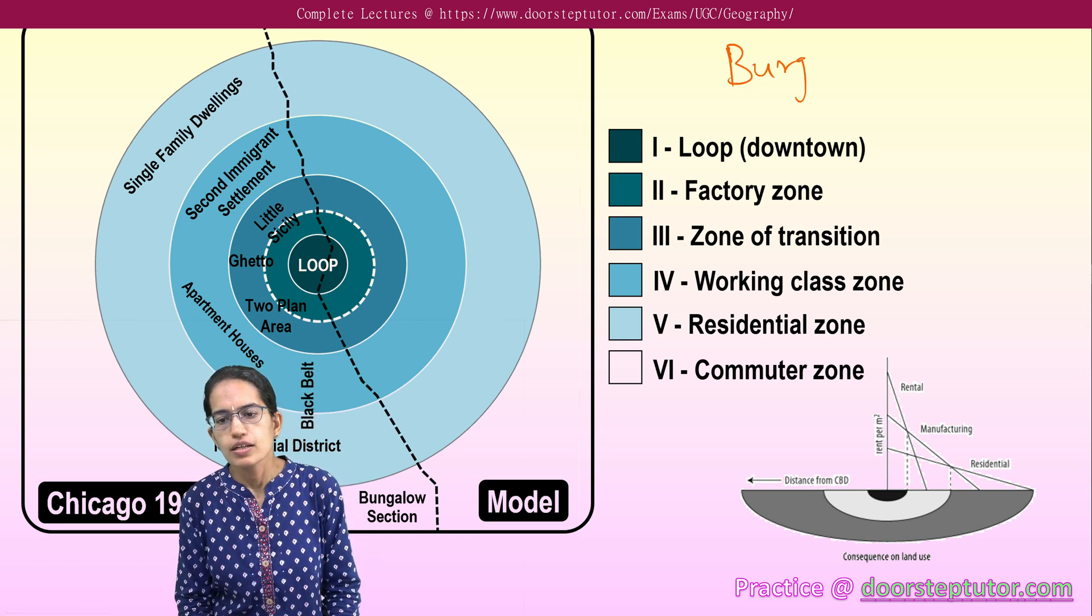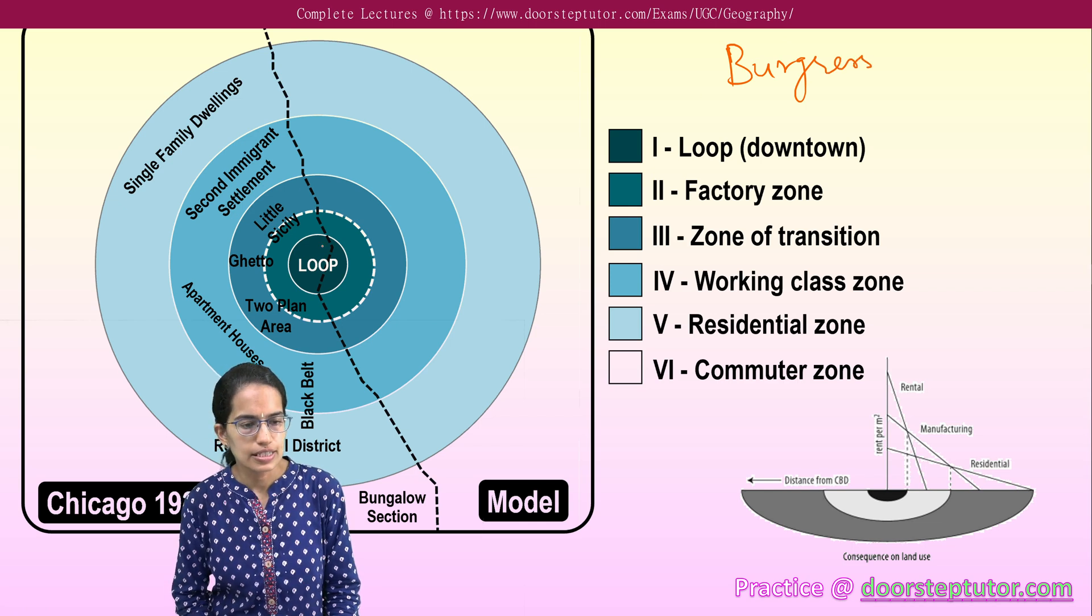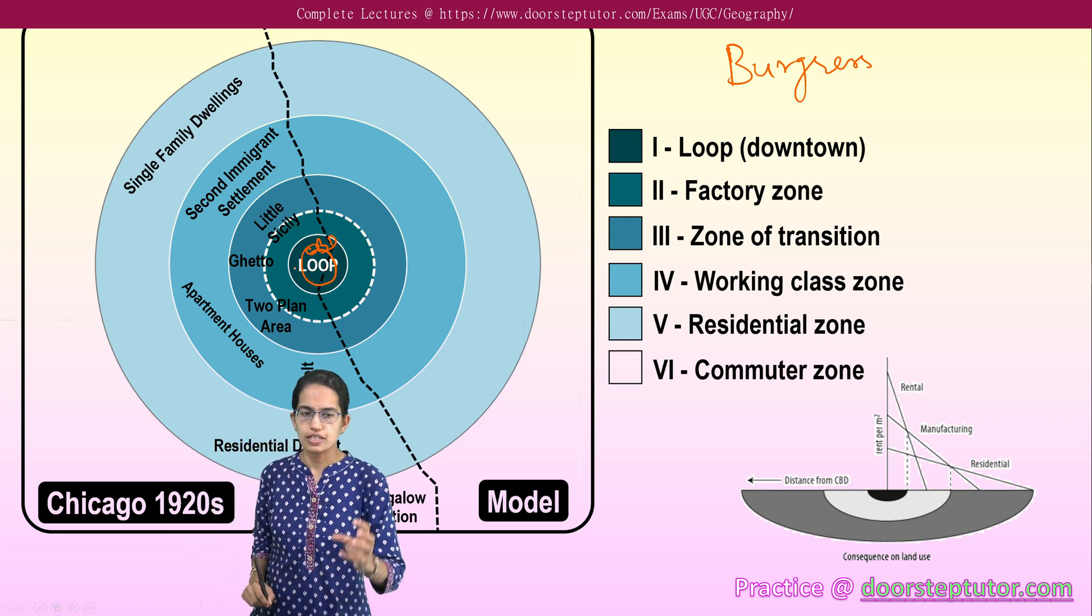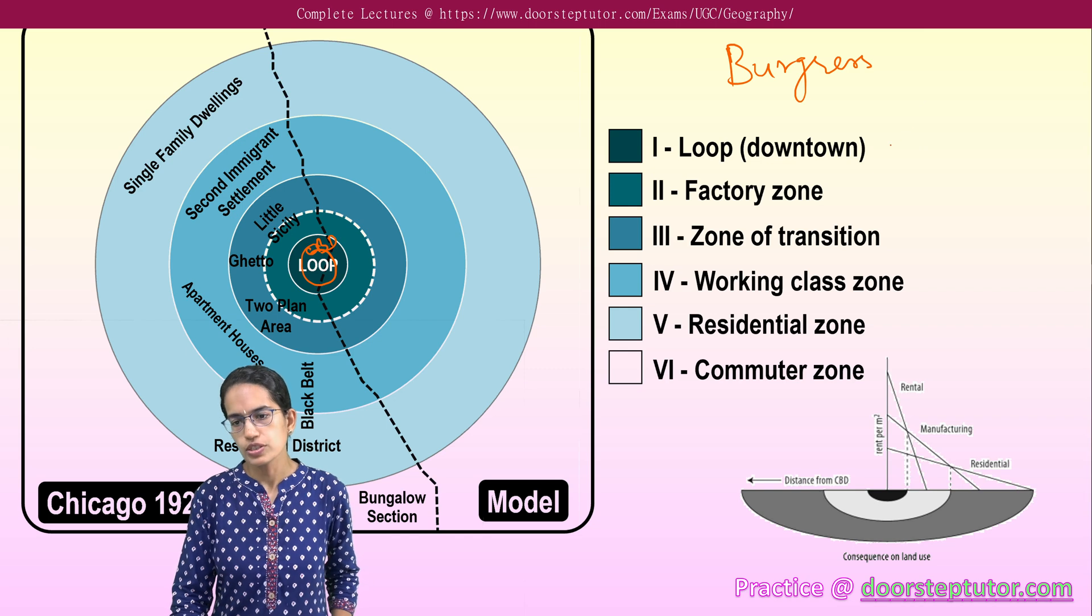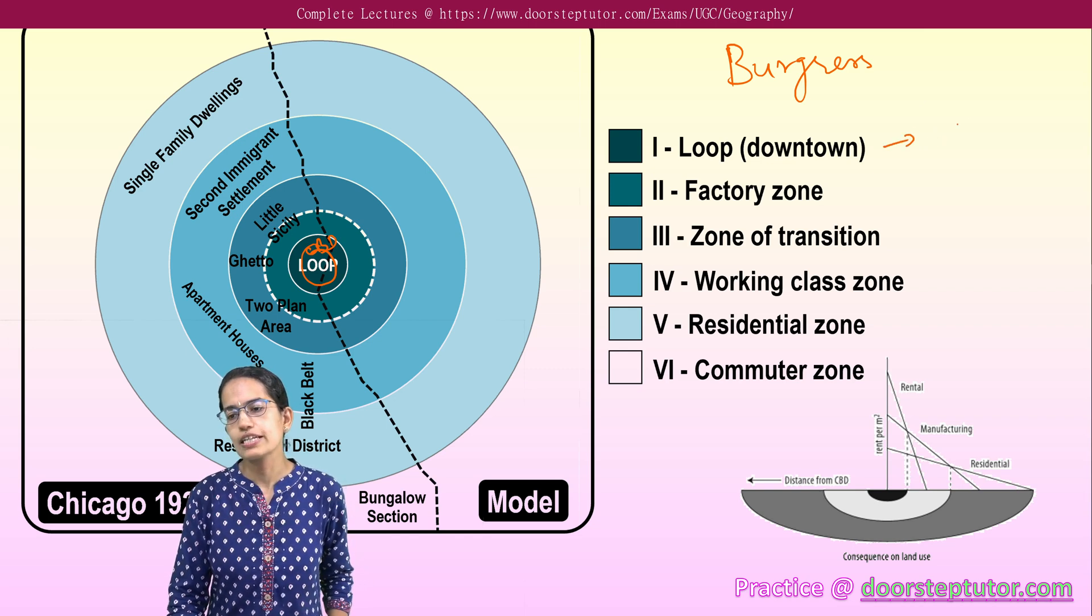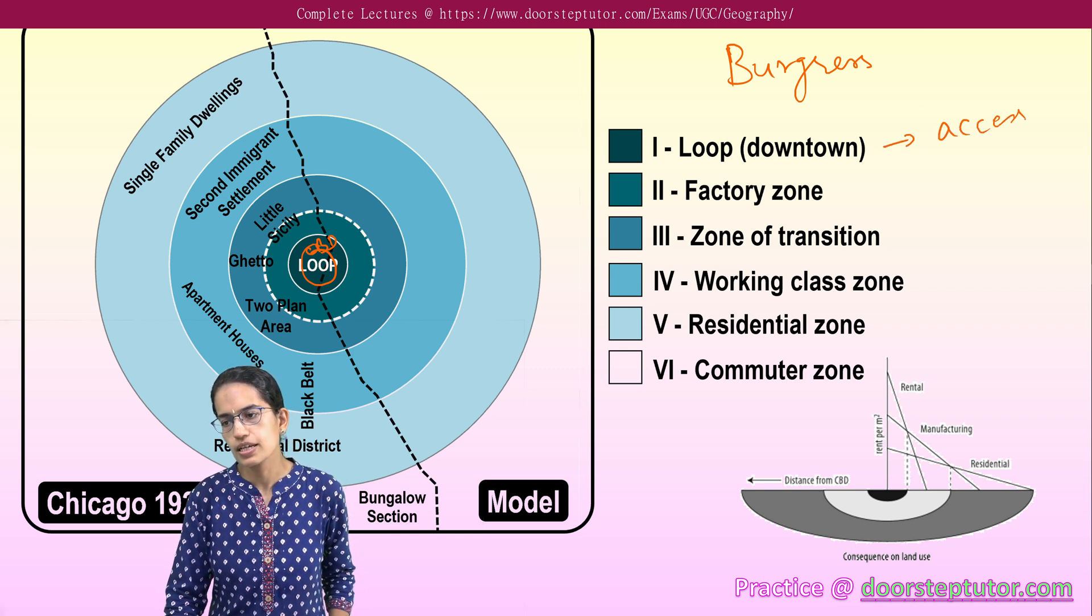Under the Burgess model, the idea is there is a central business district and this CBD or the central business district is located in the center. Around this is everything that revolves. This downtown or the CBD has maximum accessibility and also maximum visibility.